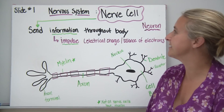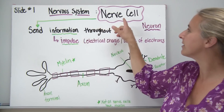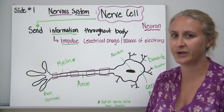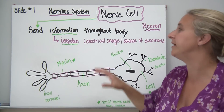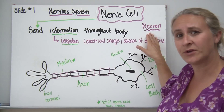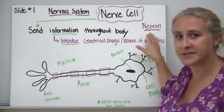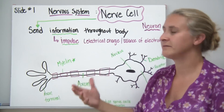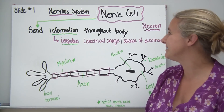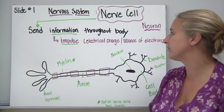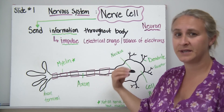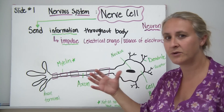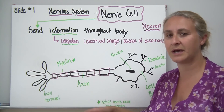Today's lesson deals with the nervous system. When we talk about the nervous system, we're referring to our nerve cells, which we can also call neurons. A nerve cell has a really big job — it sends information throughout the entire body, sometimes from the brain through the spinal cord to various parts of the body.